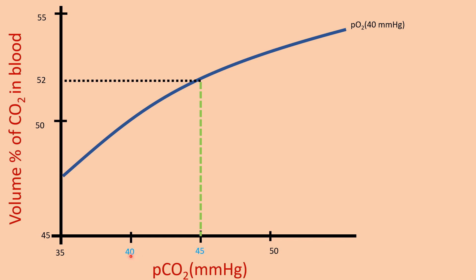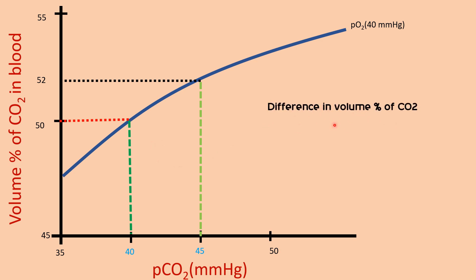When the partial pressure of carbon dioxide is 40 mmHg — as in the pulmonary capillaries — there would be 50 mL of carbon dioxide per 100 mL blood. So the difference in volume percent equals 52 minus 50, which is 2%. This would be the amount of carbon dioxide transported between the tissue capillaries and pulmonary capillaries if there were no Haldane effect.